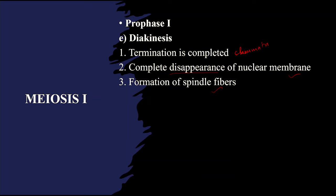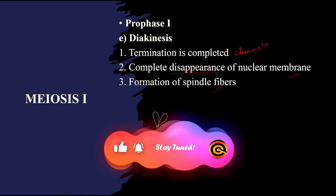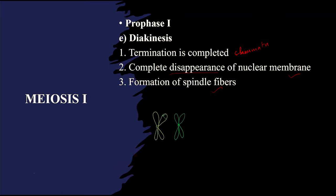Diakinesis is the fifth stage of prophase 1. Here the chromosome will be looking like this — two chromosomes. The crossing over is already done, so the genetic material has been transferred from one chromosome to the other. At the end of prophase 1, the chromosome will be looking like this because of the crossing over.